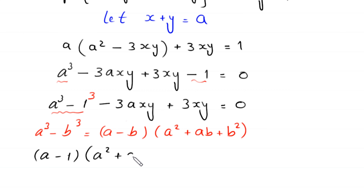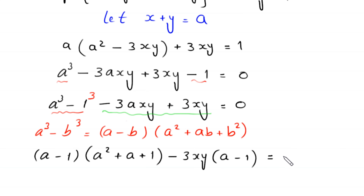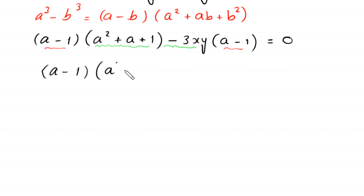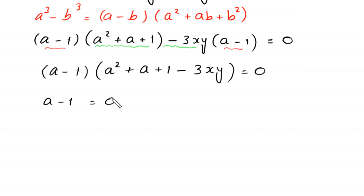...a cubed minus 1 cubed becomes a minus 1 times a squared plus a plus 1. From the remaining terms, negative 3axy plus 3xy, we can factor out negative 3xy to get negative 3xy times a minus 1 equals 0. Now the expression a minus 1 is common, so we factor it out: a minus 1 times a squared plus a plus 1 minus 3xy equals 0.